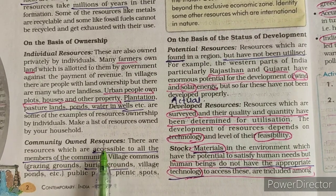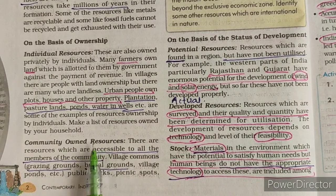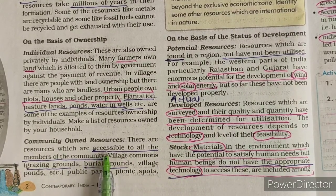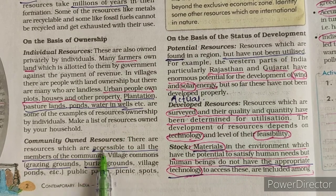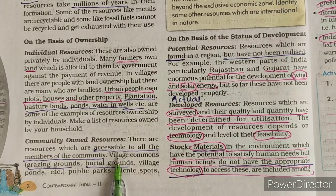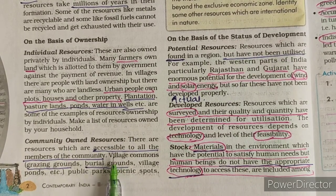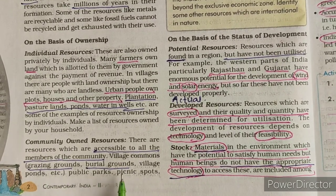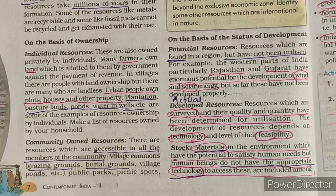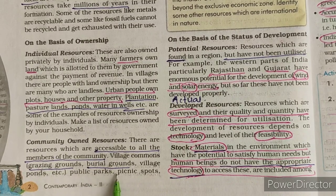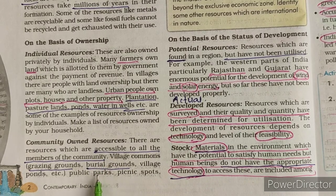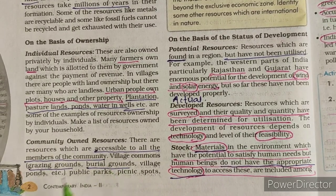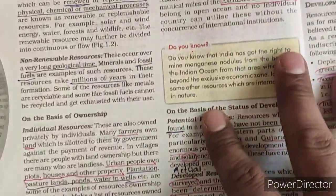Next is community-owned resources — resources which are accessible to all people of a community. Suppose there are 500 people in a village and that village has a grazing ground, burial ground, pond, public park, and picnic spot. All these resources are open for the people of that village, so they are called community-owned resources.